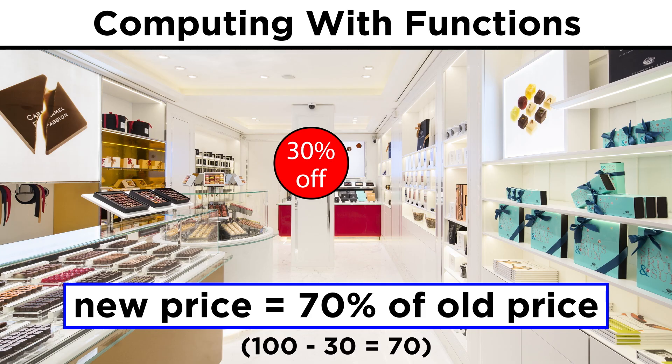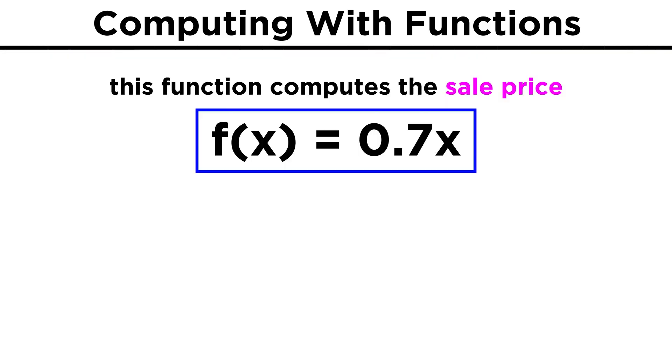Since one hundred minus thirty is seventy, the function that we would therefore use to compute the sale price of any item would be f of x equals zero point seven x. F is the function, and the x in parentheses, which is read of x, means that the function will operate on any x value that you plug in.